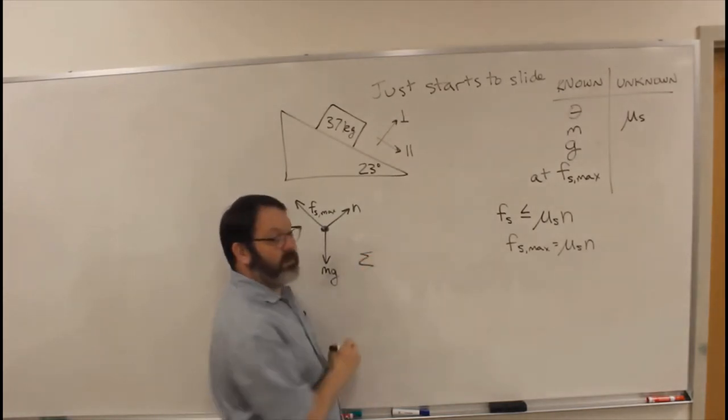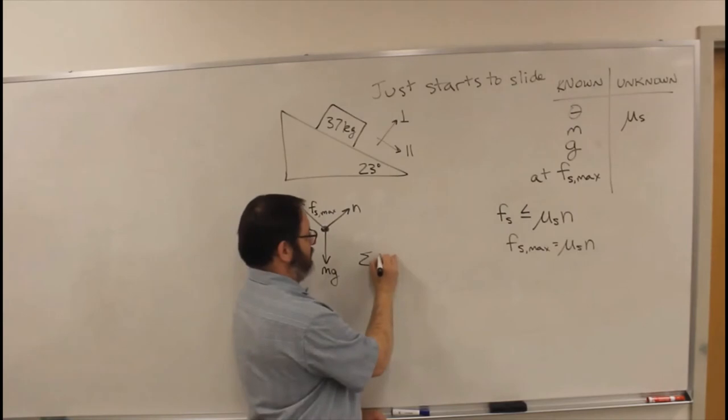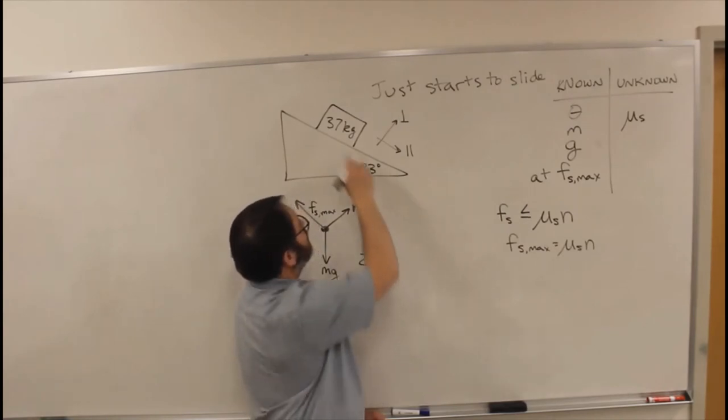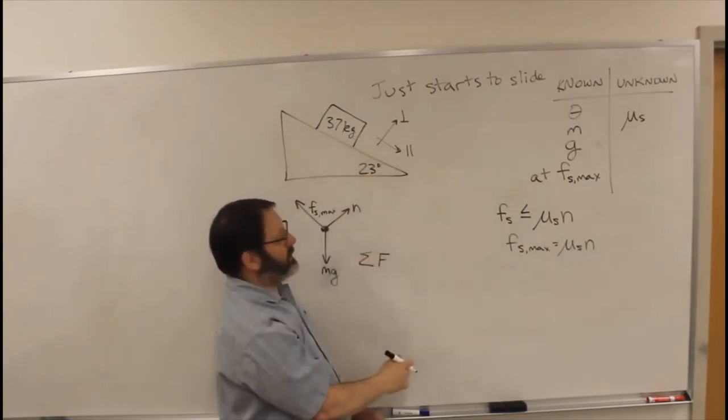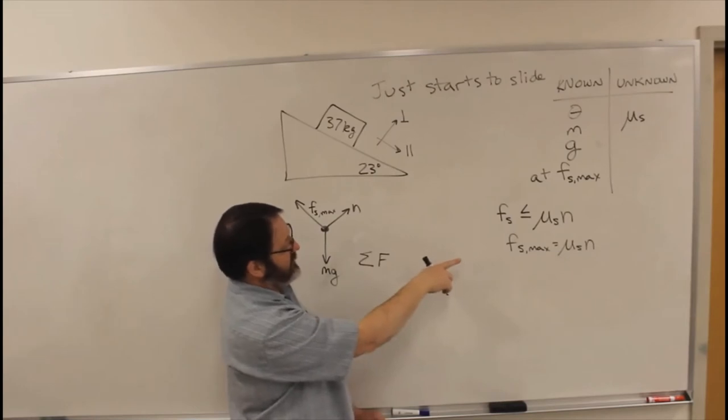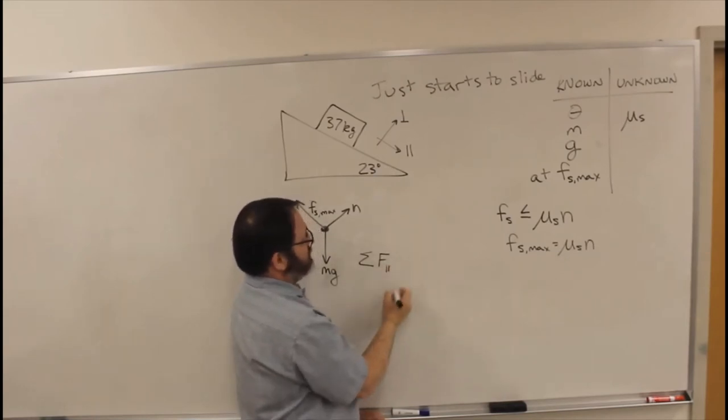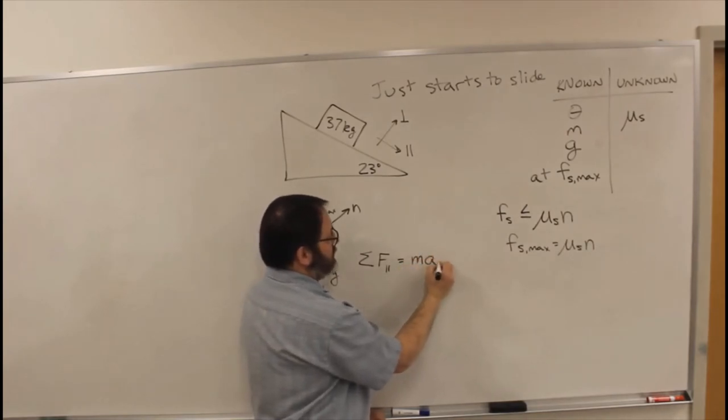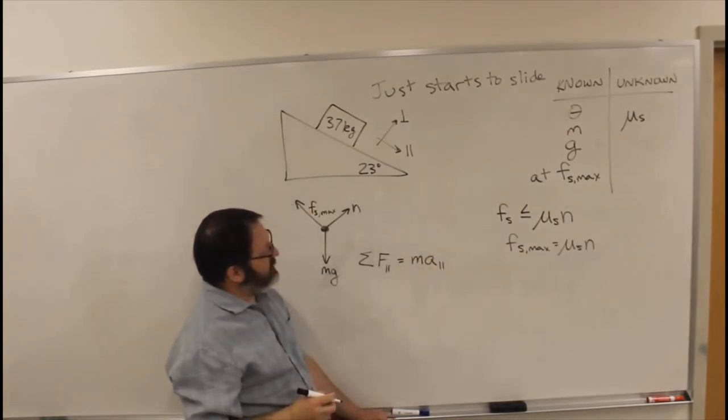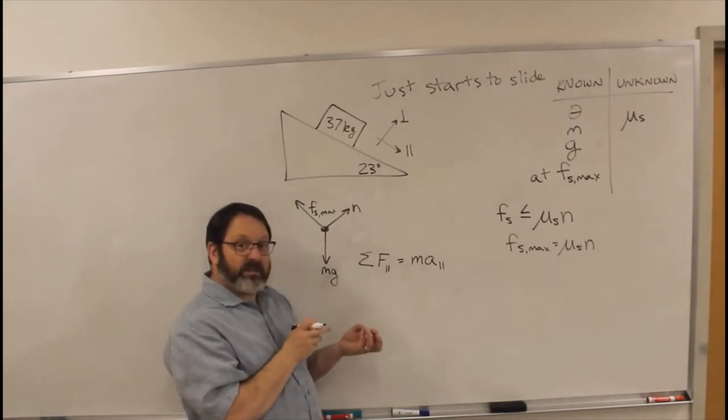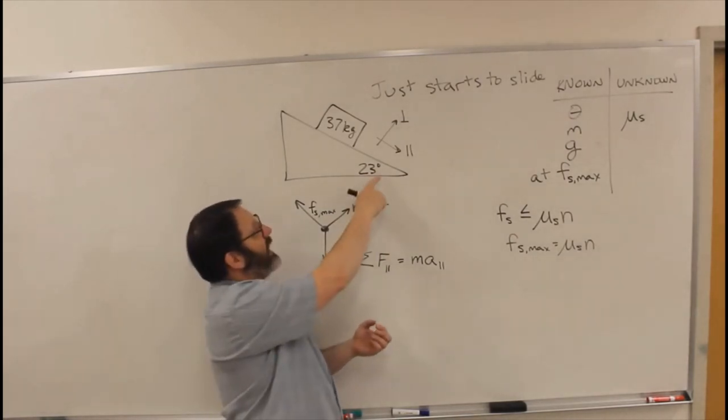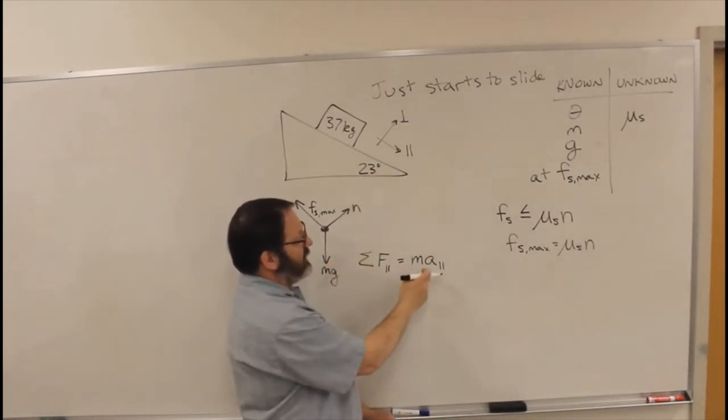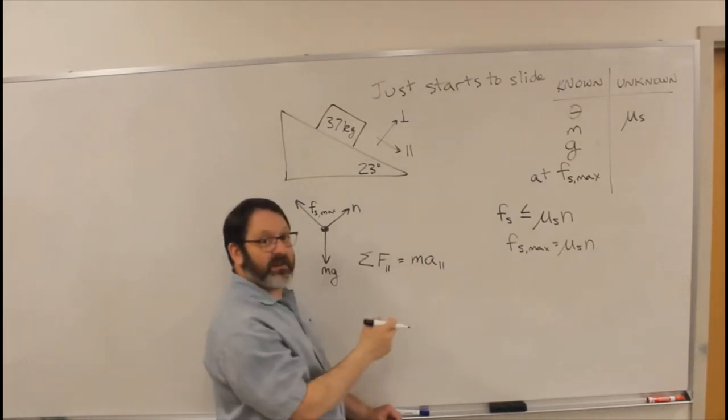So sum of forces in the—we really care about the parallel direction, right? Because that's the direction that Fs is in. So sum of forces in the parallel direction is mass times acceleration in the parallel direction. And just before it starts to slide, when you're at that 23 degrees, it's not moving. So the acceleration has to be zero.